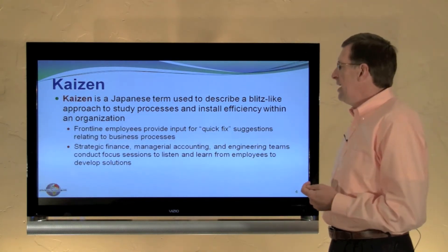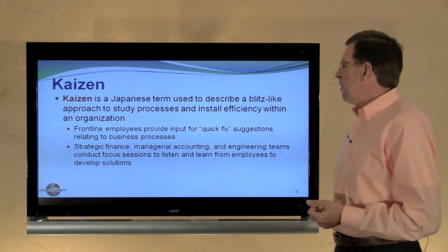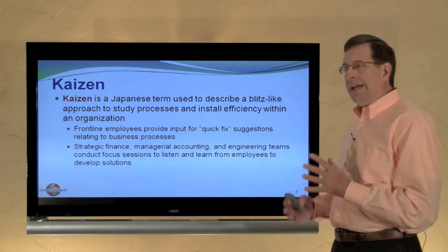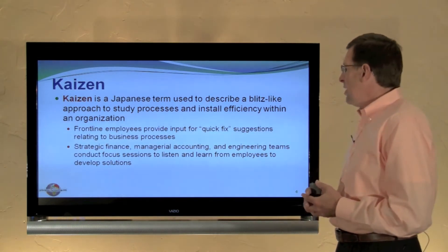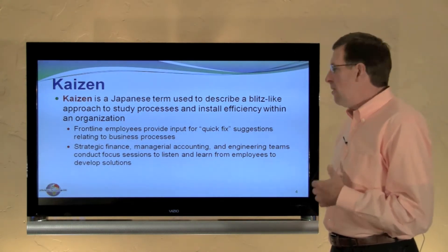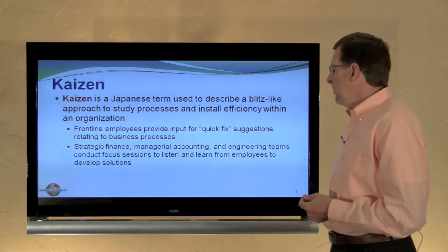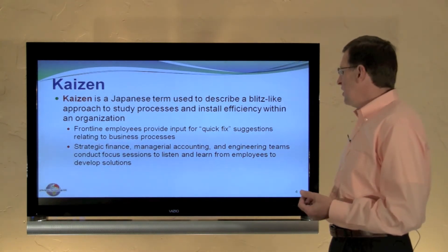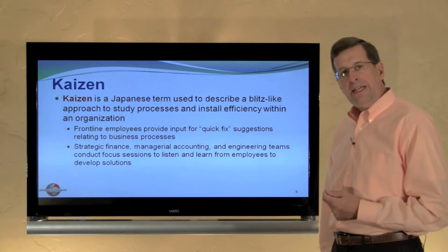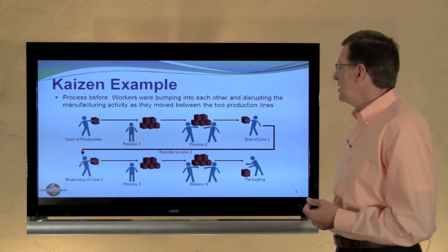Kaizen is a term you might hear. It's a Japanese term used to describe a blitz-like approach to study processes and install efficiency within an organization. It typically involves frontline employees who have their hands on it on a daily basis, and they're able to provide input on quick fixes and suggestions related to business process improvement. Strategic finance, managerial accounting, and engineering teams conduct focus groups and learn from employees about how to develop solutions to business problems and improve business efficiencies and processes.